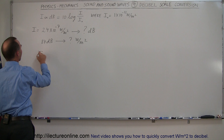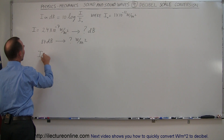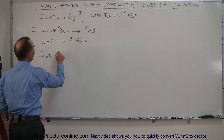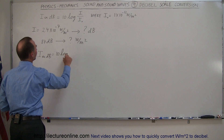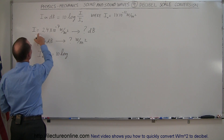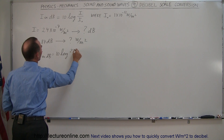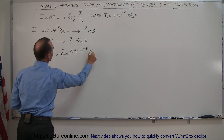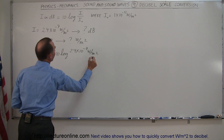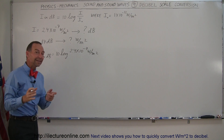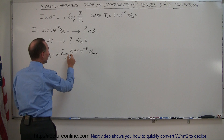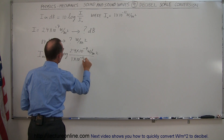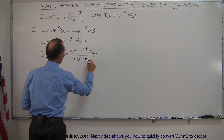So I is equal to this. Therefore, I in decibels is equal to 10 times the log of the intensity that you're hearing, which is 2.4 times 10 to the minus 7 watts per square meter, divided by the threshold of sound, which is 1 times 10 to the minus 12 watts per square meter.